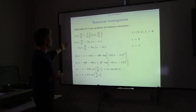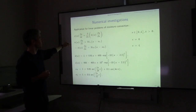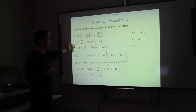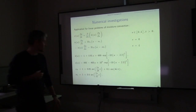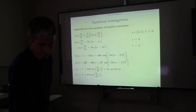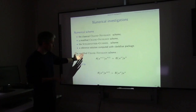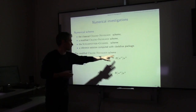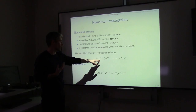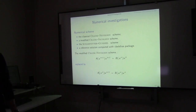We performed a numerical investigation using these two schemes. The test case is a convection equation with Robin-type boundary conditions, material properties as specified, and boundary conditions evolving according to a sinusoidal function. We compared the classical Crank-Nicholson, a modified version, and the Scharfetter-Gummel scheme against a reference solution computed using a Chebyshev package. We observed a good representation of the physical phenomena — the evolution of vapor pressure inside the material.